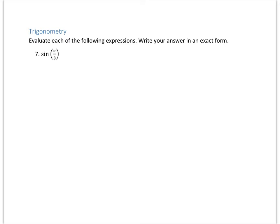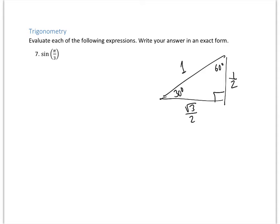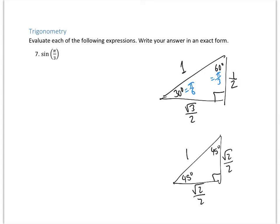Next we need to remember some facts about trigonometric functions. There are some special angles that commonly show up — related to 30-60-90 degree triangles and 45-45-90 triangles. In the 30-60-90 triangle, the sides are 1/2, square root of 3 over 2, and 1. In radians, 30 degrees is π/6 and 60 degrees is π/3. The 45-45-90 right triangle is isosceles, with sides square root of 2 over 2, square root of 2 over 2, and 1, with each acute angle being π/4.